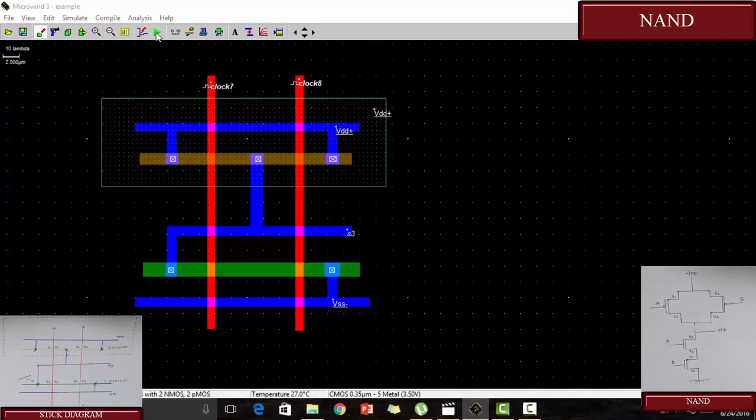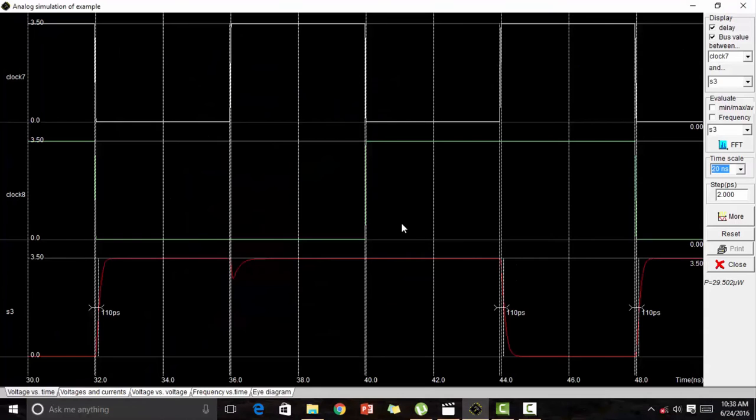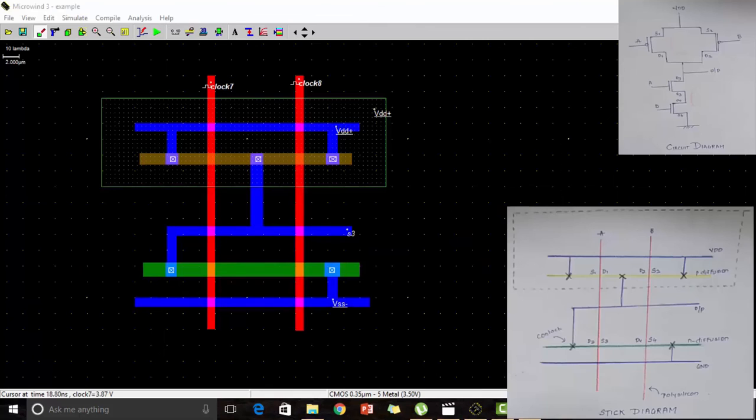So this is the output obtained. This is our input A, and this is our input B. For input 00 we get output as 1. For input 10 we get output 1. For input 01 we get output 1.